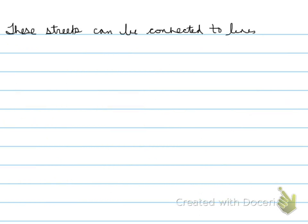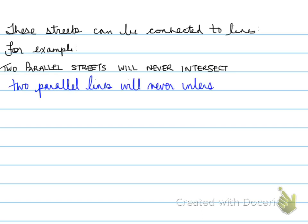So these streets can be connected to lines in the following way. For example, two parallel streets will never intersect. How does that relate to lines? Well, two parallel lines will also never intersect. So therefore there are no intersection points. But let's think about linear relationships and how they will apply.